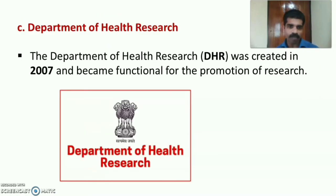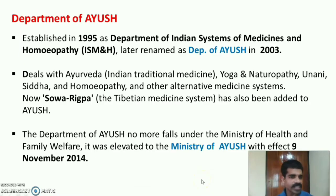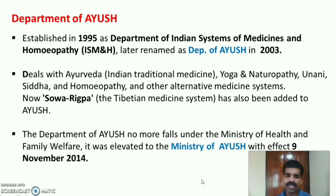The Department of Health Research (DHR) was created in 2007 for the promotion of research in India. The Department of AYUSH was established in 1995 as the Department of Indian System of Medicine and Homeopathy, later renamed as Department of AYUSH in 2003, and was elevated to the Ministry of AYUSH with effect from 9th November 2014.